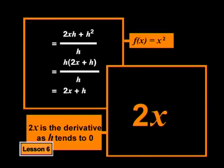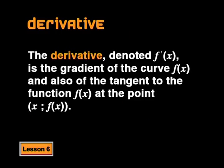So the general process we used here, called differentiation, helped us to determine the derivative without having to consider the values of x one by one. The derivative, denoted as f dashed or f prime of x, is the gradient of the curve f of x, and also the gradient of the tangent to the function f of x at the point x, f of x. If you think how hard we worked with the original function to determine it, I like the word derivative. It really gives a sense of how we obtained the new function from the old function. Through hard work. Exactly.